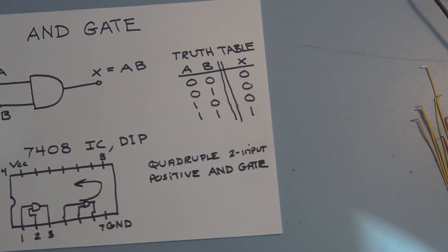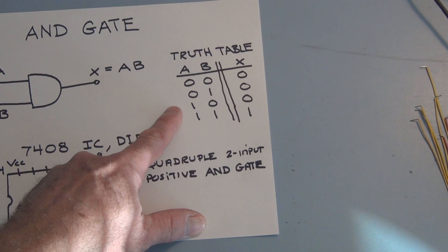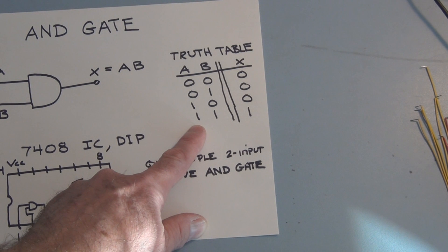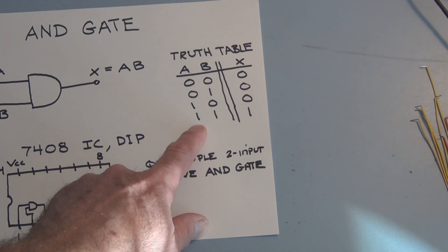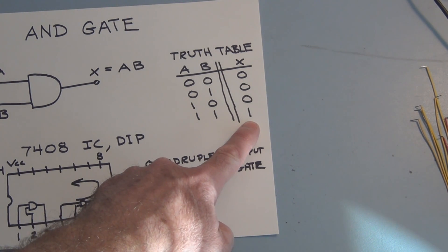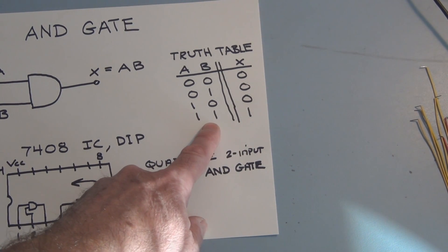And this is called a truth table, and it just summarizes the output on X for every possible combination of input on A and B. So as you can see here, we'll only have an output when both inputs are one.